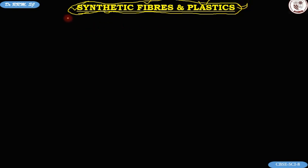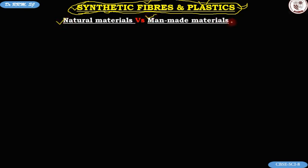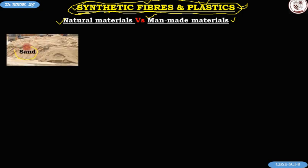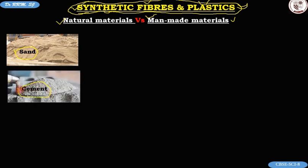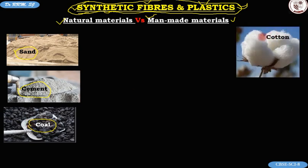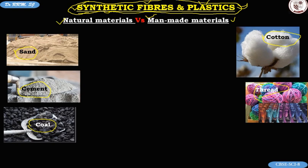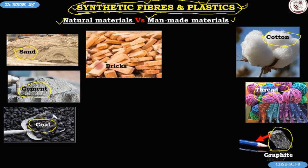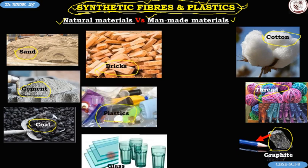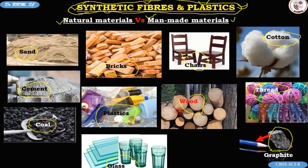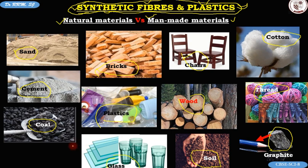Before that, let's understand natural and man-made materials. Let me place before you some images of things or materials that you see every day — in your houses, in the market, and in your school. We have sand, cement, coal, current, thread, graphite, bricks, plastics, glass, wood, chairs, soil, and ethene gas. We can't see ethene gas, so just the name is enough.